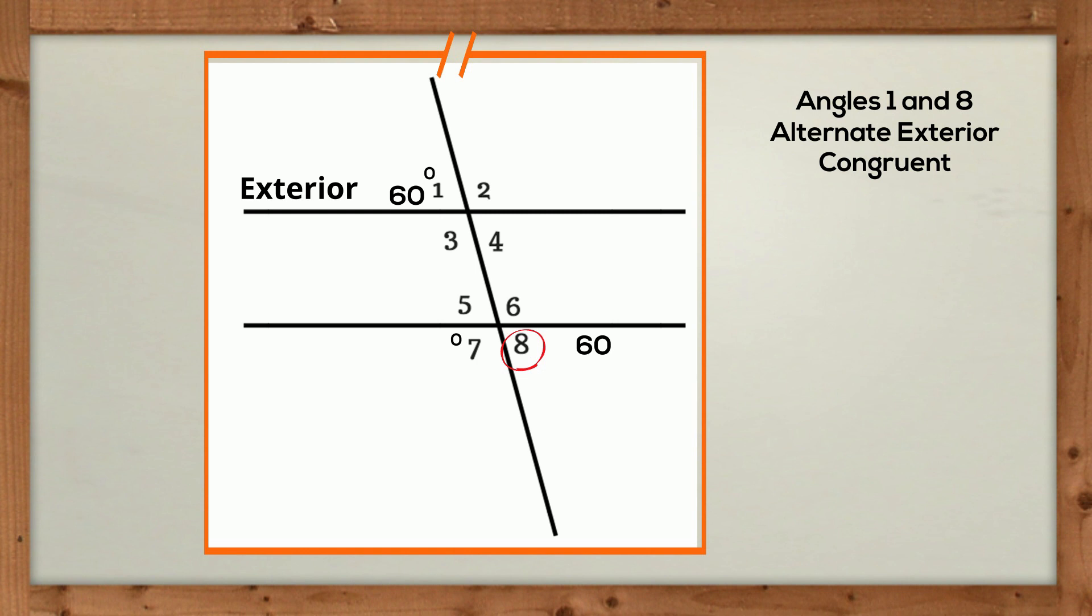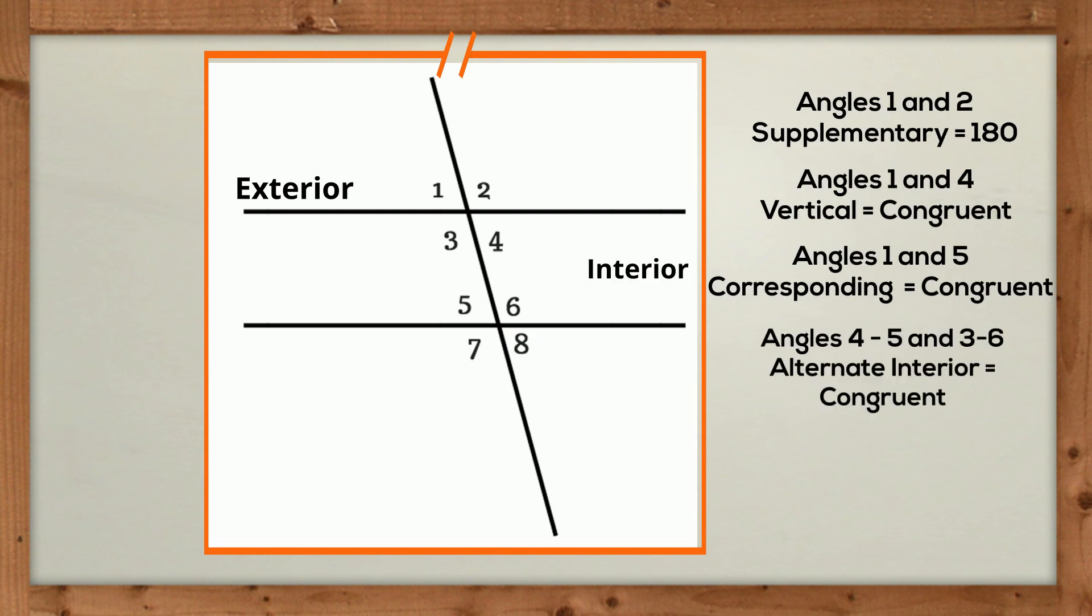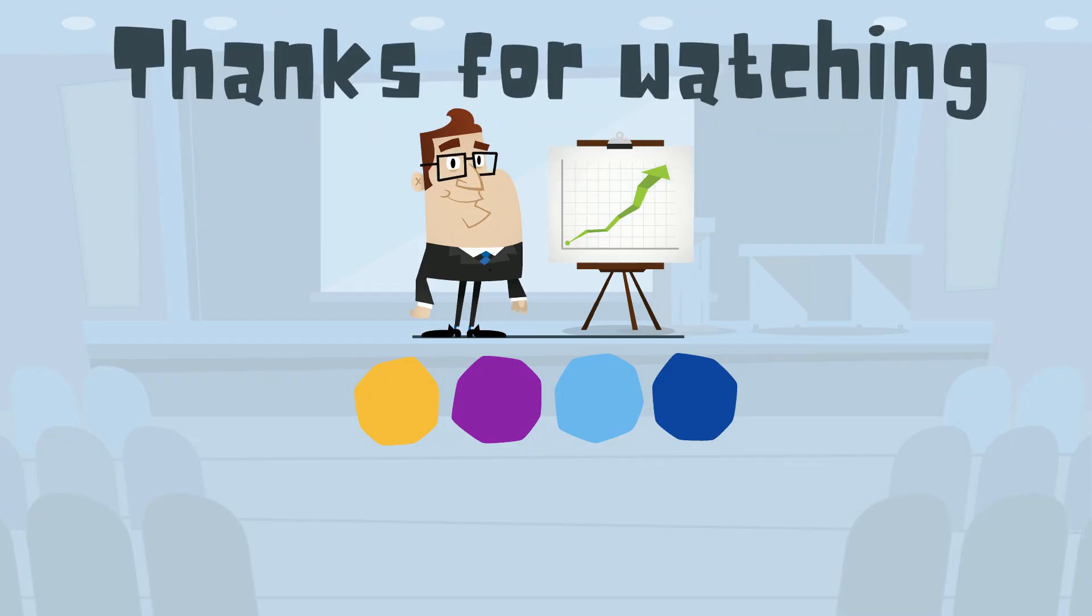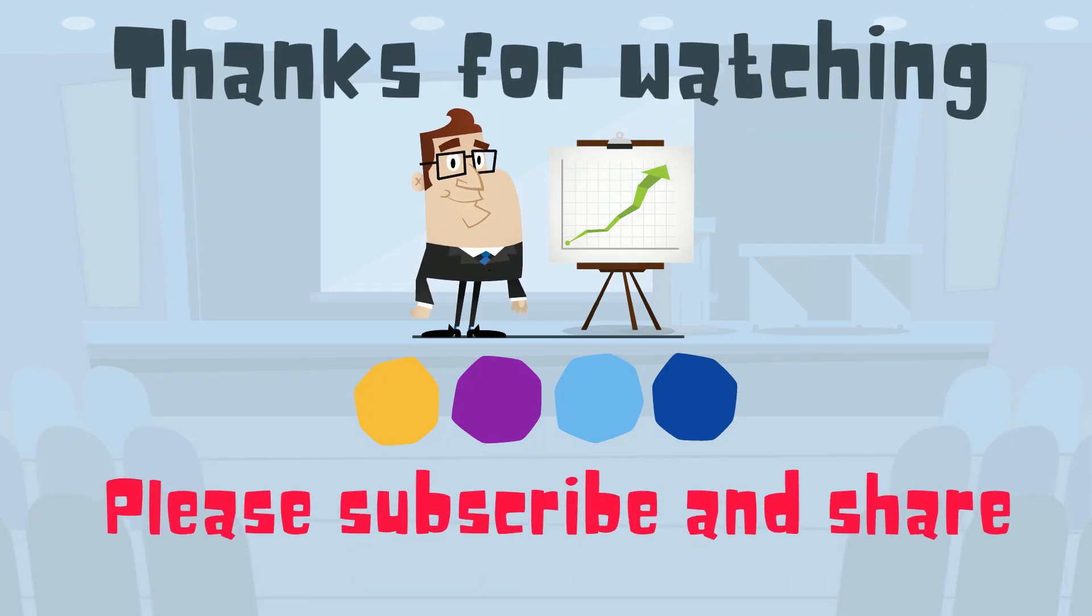Using the same method, you could find the angle measures of 5, 6, and 7. So there we go, the different angles created from a transversal. Thanks for watching, and Moomoo Math uploads a new math and science video every day.